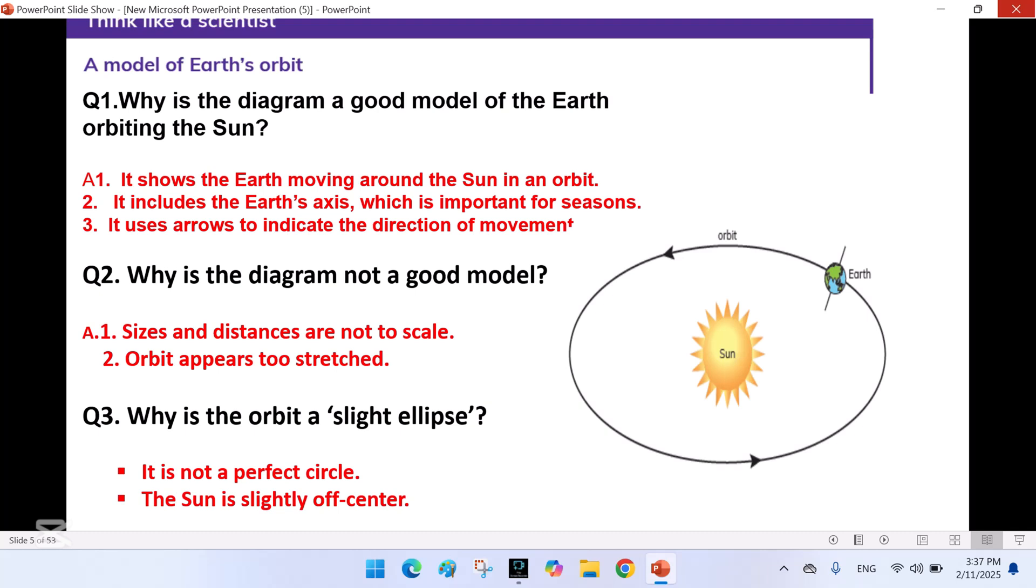Why is the diagram not a good model? Sizes and distances are not to scale. Orbit appears too stretched.